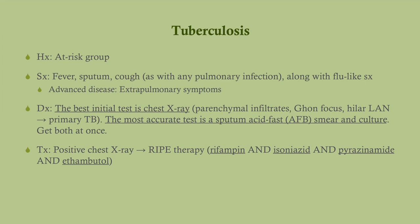On the USMLE it's going to be someone in a high-risk group, often an immigrant or somebody who traveled. The symptoms are your typical pulmonary infection symptoms: fever, sputum, and a cough. However, these patients will also have a more protracted course, and oftentimes they'll have things like weight loss and night sweats. So you've got a patient with protracted pulmonary symptoms and weight loss — sometimes you might think this could be lung cancer. The best initial test is a chest x-ray, and at the same time you're going to get a sputum sample for an acid-fast smear and culture.